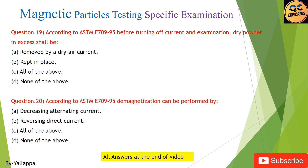Question 20: According to ASTM E709-95, demagnetization can be performed by: (A) decreasing alternating current; (B) reversing direct current; (C) all of the above; (D) none of the above.